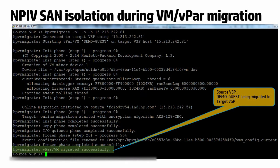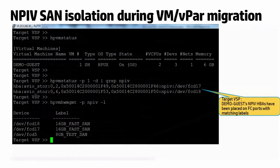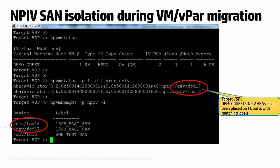Now we initiate a migration from the source to the target VSP. On the target VSP, we see that the demo guest NPIV HPAs have been placed on FCD17 and FCD18, both of which have matching labels of 16GB fast SAN.